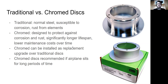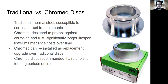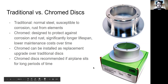Chrome discs are designed to protect against corrosion and rust because of their chrome plating, making them more resistant to corrosion and rust. This enables them to have a significantly longer lifespan and lower maintenance costs over time, since you're not having to replace the brake discs as often. Chrome discs can be installed as replacement upgrades over traditional discs.